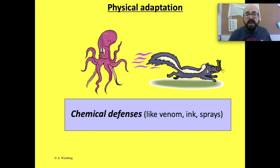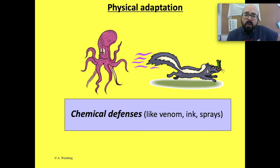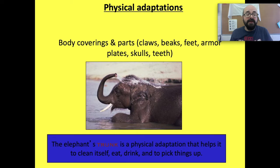Another physical adaptation is chemical defenses, like venom, ink, and sprays. The skunk smells awful and a lot of predators will stay away from it — that's a really good physical adaptation to help it survive longer. The octopus uses ink to cloud the water so it can escape while its predators are disoriented or can't see it.